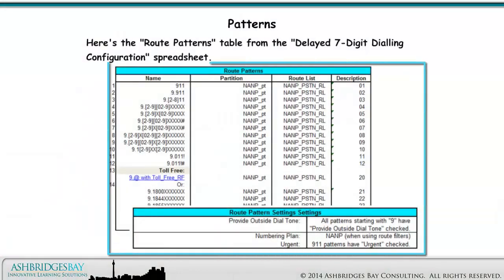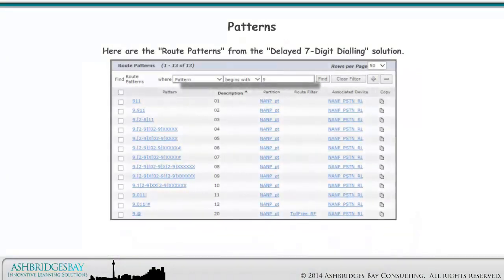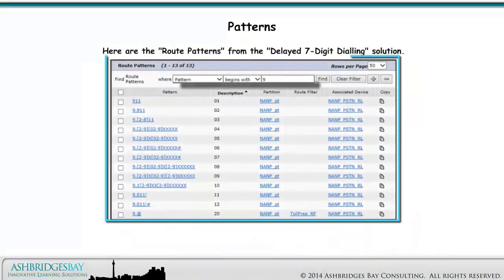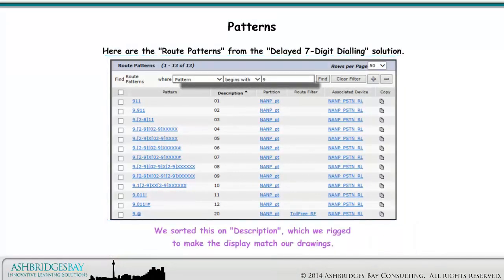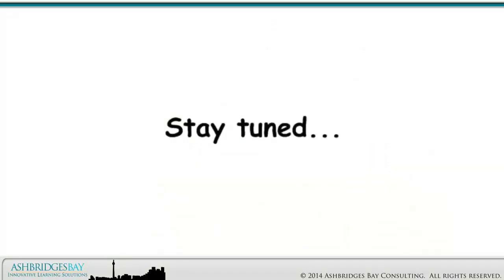Here is the Route Patterns table from the Delayed 7-Digit Dialing Configuration spreadsheet. Here are the Route Patterns from the Delayed 7-Digit Dialing solution — we sorted this on Description, which we rigged to make the display match our drawings. Stay tuned for Enterprise 20 Dial Plan Build, Patterns for Delayed 7-Digit Dialing, Part 2.